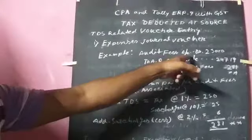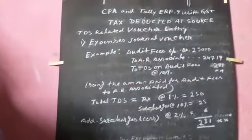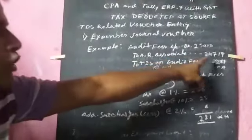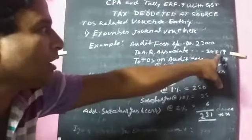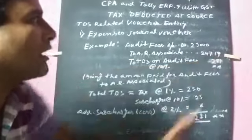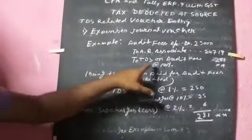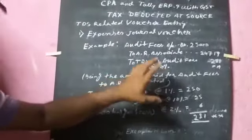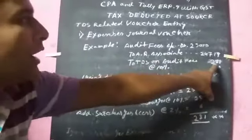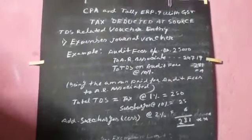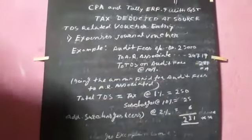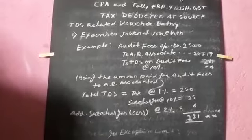Audit fees account is 25,000. To AR Associates, 24,719. And to TDS on audit fees, which is 10%, 281.